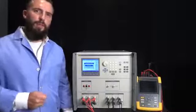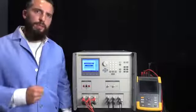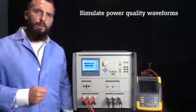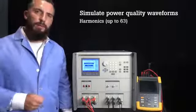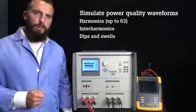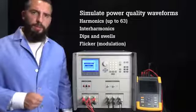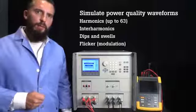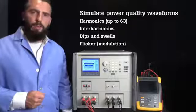The 6003A has unique advanced functions that let you change the output to accurately simulate these power quality waveforms: harmonics up to the 63rd harmonic, inter-harmonics, dips and swells, flicker, or modulation. This functionality will be covered in more detail in another video.